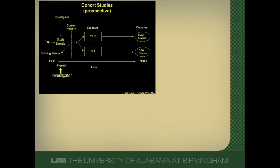So what are cohort studies? Cohort studies start out with a group of patients who are healthy — they don't have the disease that we're interested in. The patients are broken up into an exposed cohort and an unexposed cohort, and then these two cohorts are followed forward in time for the development of disease. This is a prospective cohort study.